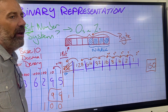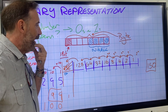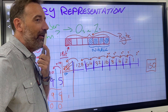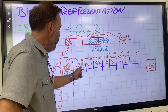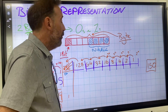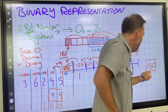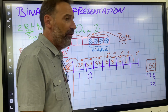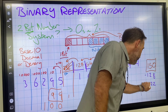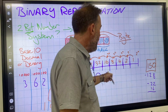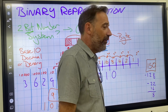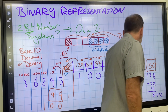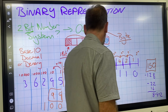Where do I start? Start at the big end. Does 128 go into 150? Yes. How much is left? 22. Does 64 go into 22? No. Does 32 go into 22? No. Does 16 go into 22? Yes — what's left? 6. Does 8 go into 6? No. Does 4 go into 6? Yes — what's left? 2. Does 2 go into 2? Yes. Does 1 go into 0? No. So that is my binary representation of 150.